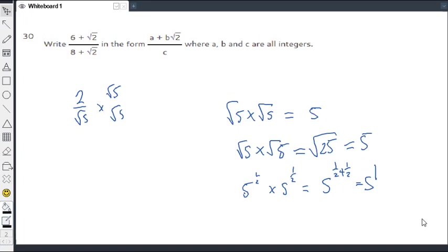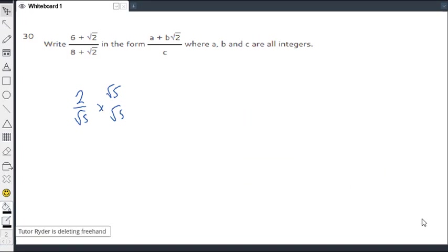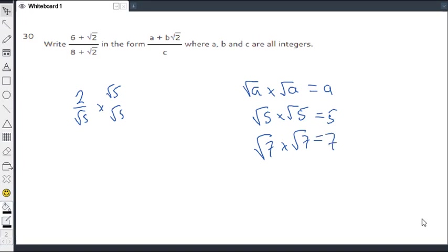Personally I think it's fairly unnecessary to do that. All you need to remember is if you have root a times root a you're just going to get a. So that could be root 5 times root 5 which will be 5. It could even be root 7 times root 7, you'll get 7. So that's your basic skill for this question.